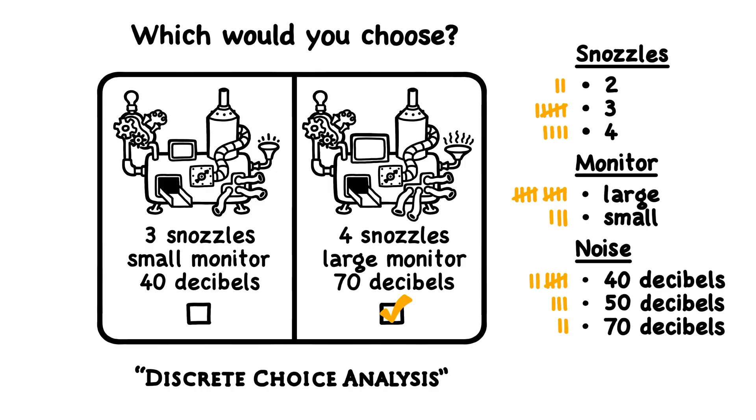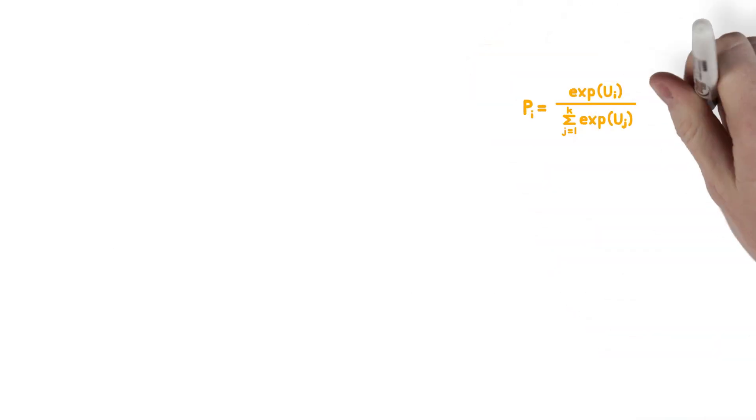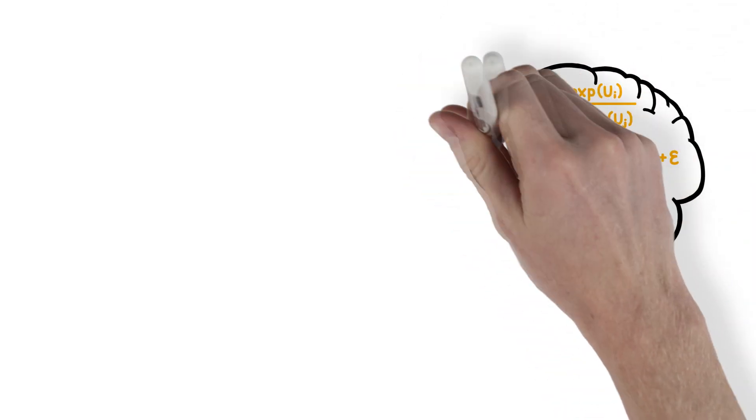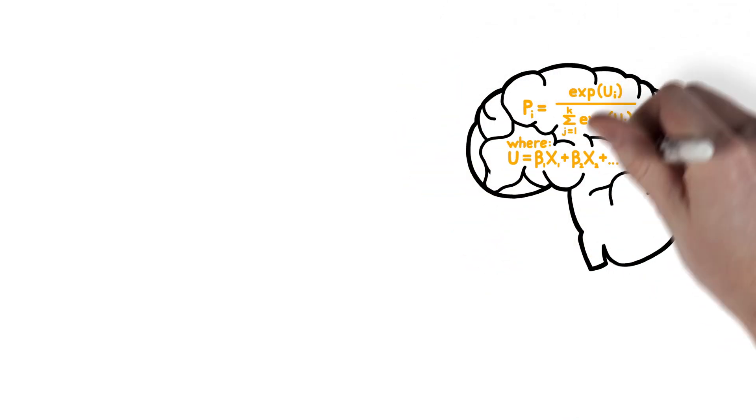Using statistical analysis, the software estimates preference scores for each consumer in the sample. Combinations of features that are chosen a lot get high utility scores.